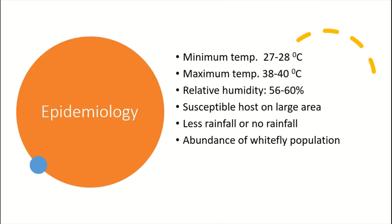Regarding epidemiology, the minimum temperature for disease development is around 28°C, and the maximum temperature at which the virus can survive is 38 to 40°C. A relative humidity of 56 to 60% is favorable. A susceptible host grown over large monoculture areas, less or no rainfall, and high whitefly populations — which are difficult to control — all contribute to epidemic conditions.